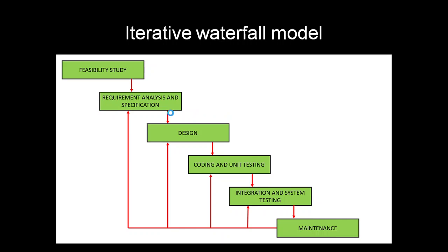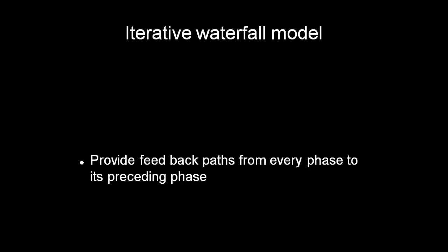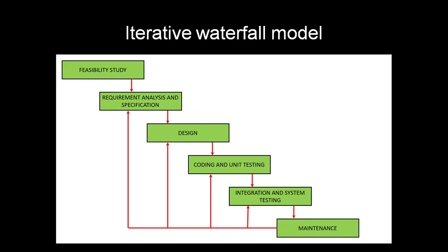In the iterative waterfall model, there is a feedback mechanism. We can see a feedback path from each phase to its preceding phase, except to the feasibility study. Because once feasibility study is completed, we will not go back to it — we have already decided whether the project is feasible or not. Except for that phase, all other phases have a feedback path.